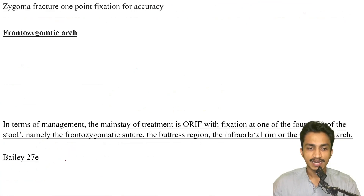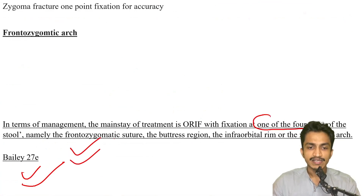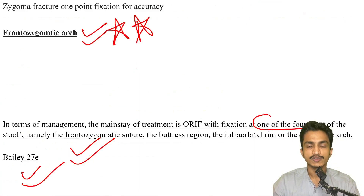Zygoma fracture one-point fixation for accuracy: this is a direct line from Bailey. The mainstay of treatment in open reduction internal fixation is fixation of one of the four legs, and that is the frontozygomatic suture — the buttress region — or the infraorbital rim or the zygomatic arch. The frontozygomatic suture is the one-point fixation for accuracy.